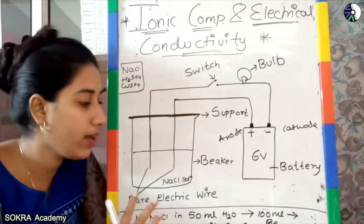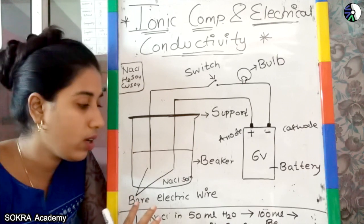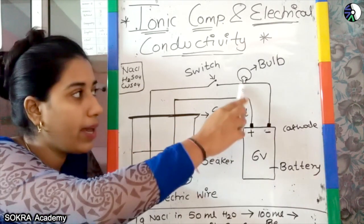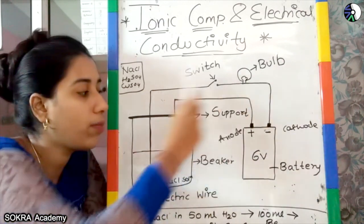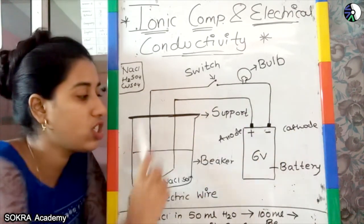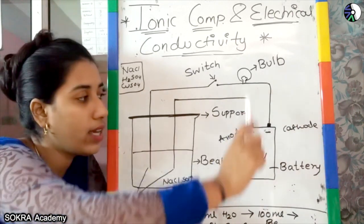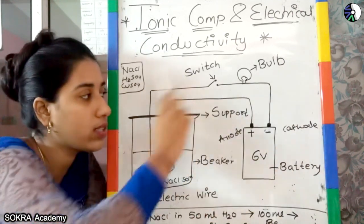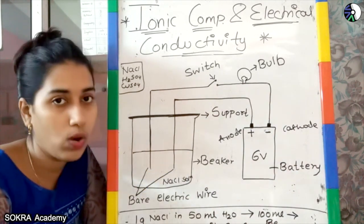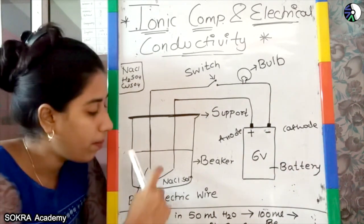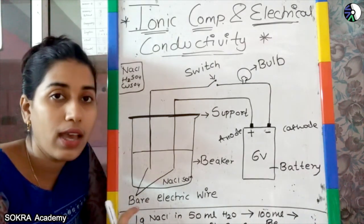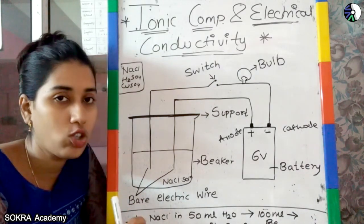Let us see what is going to happen in the circuit when the circuit is complete. Electrons are going to flow through the circuit and the bulb is going to glow. The liquid medium is also going to conduct the electrons.